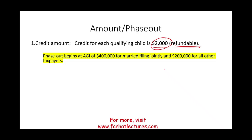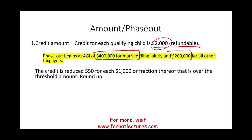For the phase-out: if you're married filing jointly, once your income goes above $400,000 you will start to lose the credit. And once you go above $200,000 as a single filer or anything other than married filing jointly, your child tax credit will be reduced. The credit is reduced $50 for each $1,000, or fraction thereof, that is over the threshold amount — and you always round up.